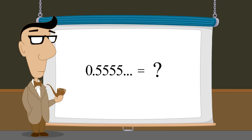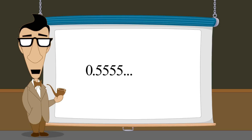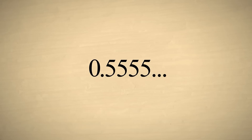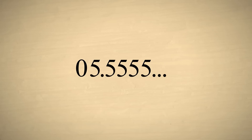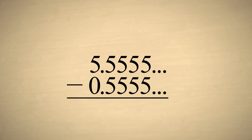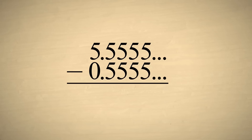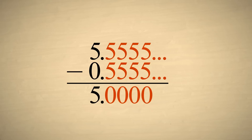Repeating decimal numbers have one or more digits after the decimal point that repeat forever. As an example, let's convert a decimal number with one infinitely repeating digit into a fraction. The first step is to eliminate the infinitely repeating digit. We do this by first multiplying the number by ten to shift it one column to the left, and then subtracting the original number. Since both numbers in this example have an infinite number of repeating fives, this eliminates all the repeating fives after the decimal point.